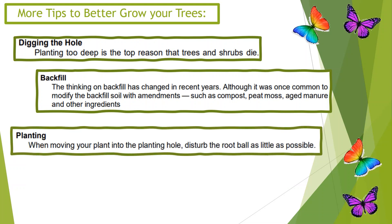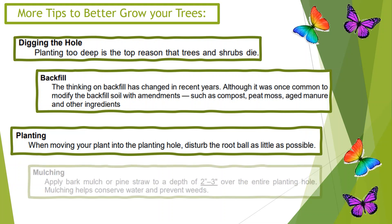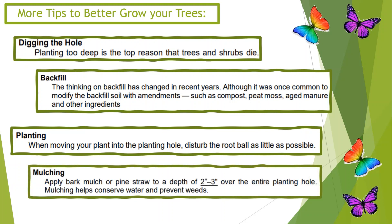Tip 14 continued — Planting: when moving your plants into the planting hole, disturb the root ball as little as possible. Tip 15: Mulching — apply bark, mulch, or pine straw to a depth of 2 to 3 inches over the entire planting hole. Mulching helps conserve water and prevent weeds.